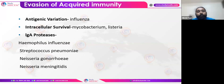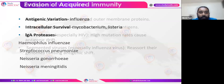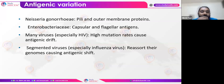Evasion of acquired immunity is carried out via antigenic variation — as studied in influenza — intracellular survival in Mycobacterium or Listeria, and production of IgA proteases, which include Haemophilus influenzae, Streptococcus, Neisseria gonorrhoeae, and Neisseria meningitidis. Antigenic variation in influenza involves genome reassortment causing antigenic shift, while in HIV there is a high mutation rate causing antigenic drift. This also occurs in Neisseria and Enterobacteria.